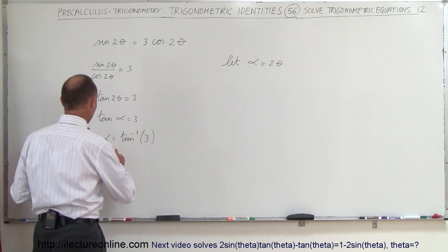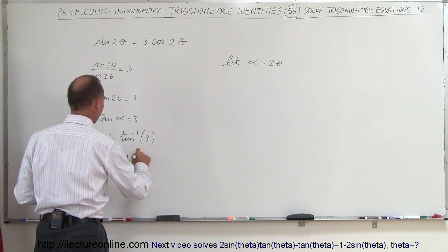We'll just call it 71.6 degrees. So α is equal to 71.6 degrees.